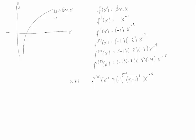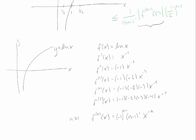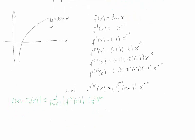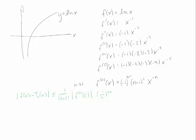Now let's plug back into our error approximation, which we've reduced to: 1 over (n+1) factorial, times the absolute value of the (n+1)th derivative at c, times (1/2)^(n+1). Using our derivative formula with n replaced by n+1: taking absolute values removes the (minus 1) factor, (n+1 minus 1) factorial becomes n factorial, and x to the minus (n+1) becomes c to the minus (n+1).